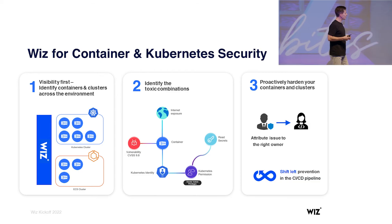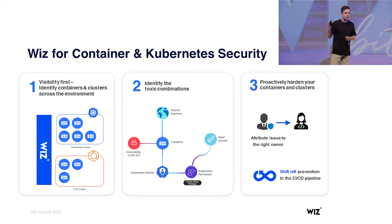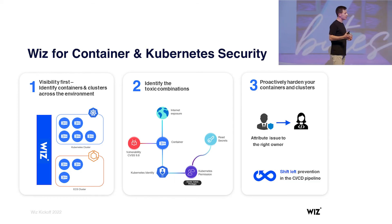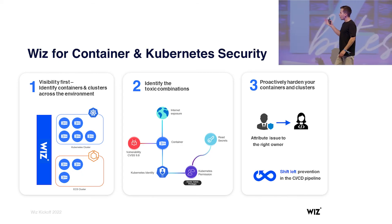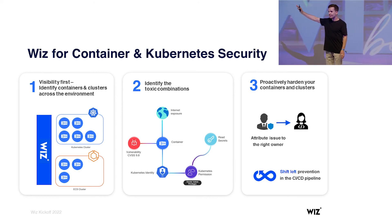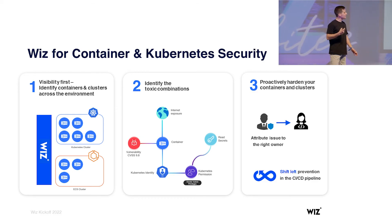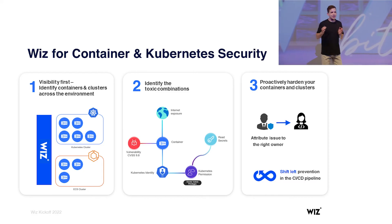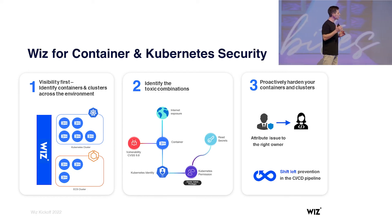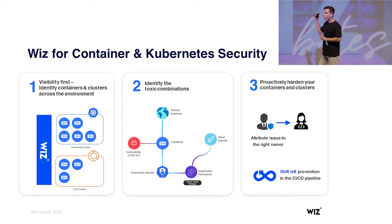Security teams need to understand where to start. Finally, we offer an operation around container security — two things: first, making sure issues are attributed to the right owners, so they get to the right application teams and developers. But also, we allow shifting left or prevention. Once you identify the most toxic risks, you shift them left and prevent them earlier in the pipeline with Wiz CLI. Three main steps: visibility, identifying the most critical risks across container, Kubernetes, and cloud, and then operating around container security.